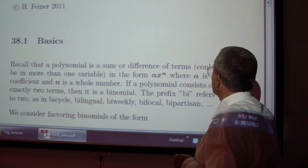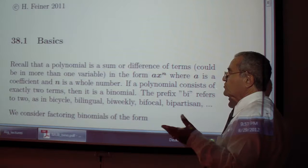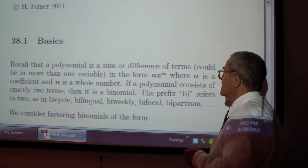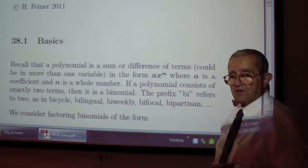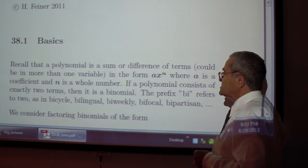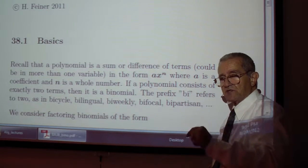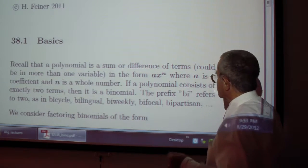Recall that a polynomial is the sum or difference of terms, which could be more than one variable, in the form of a x to the n, where a is a coefficient and n is a whole number: 1, 2, 3, and so on. It could be 0 also, leading to a constant.